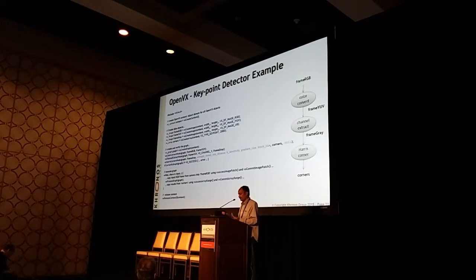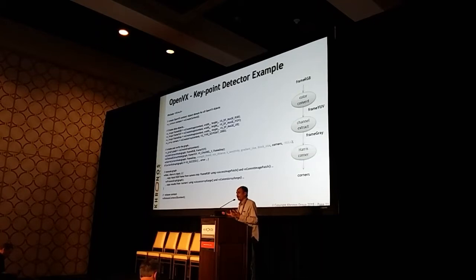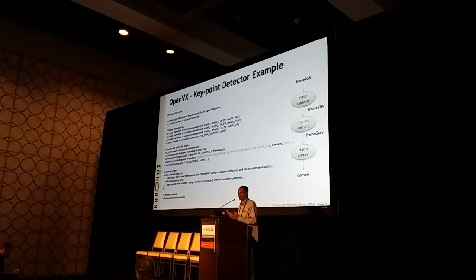After the process graph, you use similar functions to access an array. One more thing to notice here is that frame YUV and frame Gray are not virtual data. That means the underlying graph optimizer cannot optimize much, because since you said it is a data object that a user can access, the framework cannot make any assumptions. So in this particular case, the color conversion will unnecessarily create U and V frames, which are generally not needed.